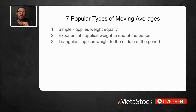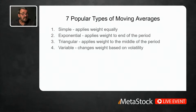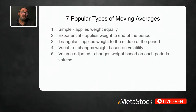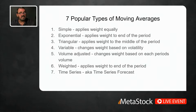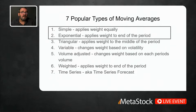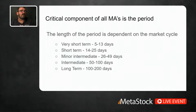Other types include the variable moving average, which changes weight based on volatility; the volume-adjusted moving average, which changes weight based on each period's volume; the weighted moving average, which applies weight to the end of the period, similar to exponential; and the time series moving average, also known as time series forecast, which is quite different and requires its own discussion. Today we're only going to be talking about simple and exponential moving averages.